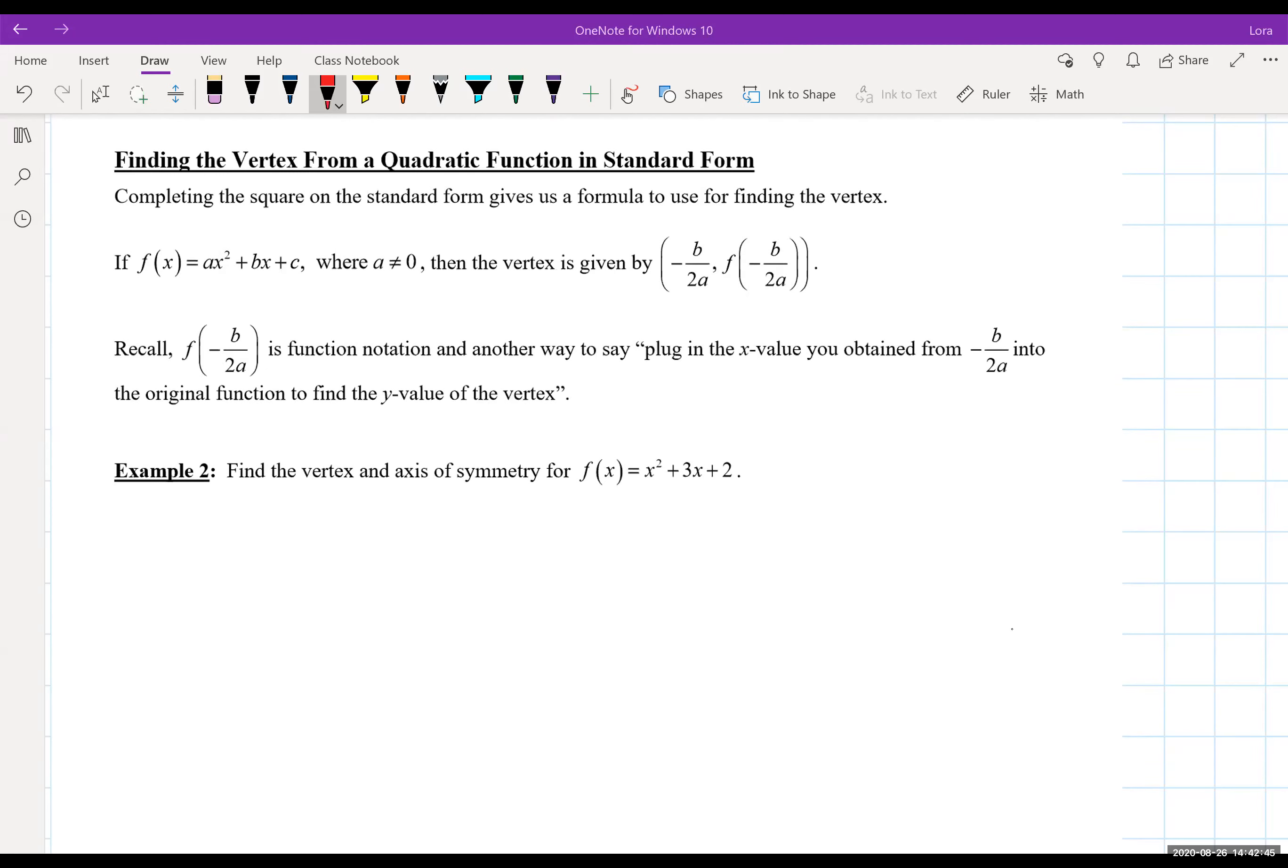You see this in the notes and pretty much what you want to focus on is as long as you are in the general form ax squared plus bx plus c and you are a quadratic function, you can find the x value of the vertex by this formula. And then the way we've given it to you is in ordered pair form.